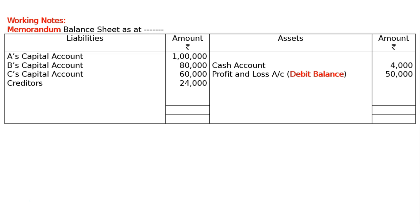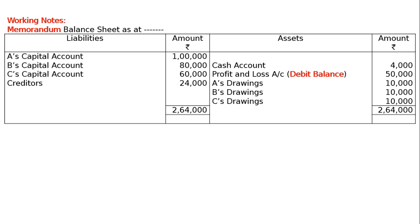The firm suffered a loss of Rs. 50,000, that is the profit and loss account debit balance Rs. 50,000. A's drawings Rs. 10,000, B's drawings Rs. 10,000, C's drawings Rs. 10,000 — each of the partners withdrew Rs. 10,000 during the year. We total the liability side, coming to Rs. 2,64,000. Take it to the asset side and deduct all items to find out sundry assets — the balancing figure is Rs. 1,80,000. With this sundry assets figure we can start our dissolution.